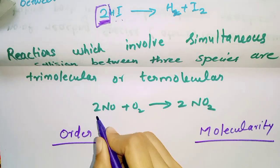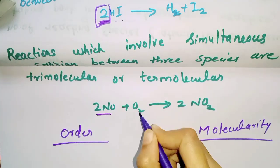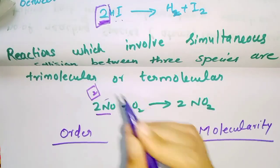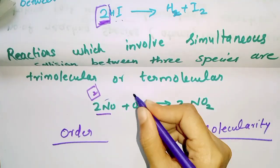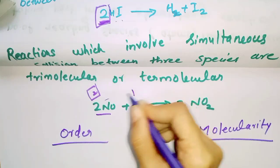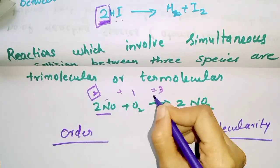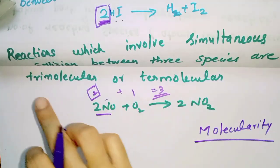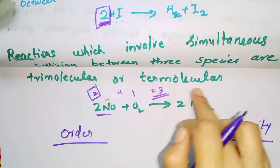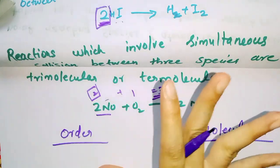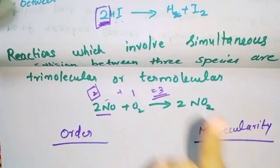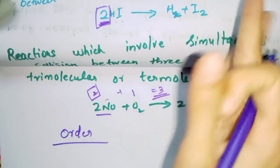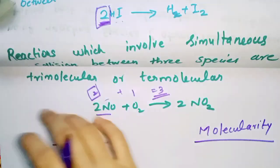An example of trimolecular is 2NO plus O2. NO is 2 moles and O2 is 1 mole, so 2 plus 1 equals 3 — this is trimolecular. So we have unimolecular, bimolecular, and trimolecular.